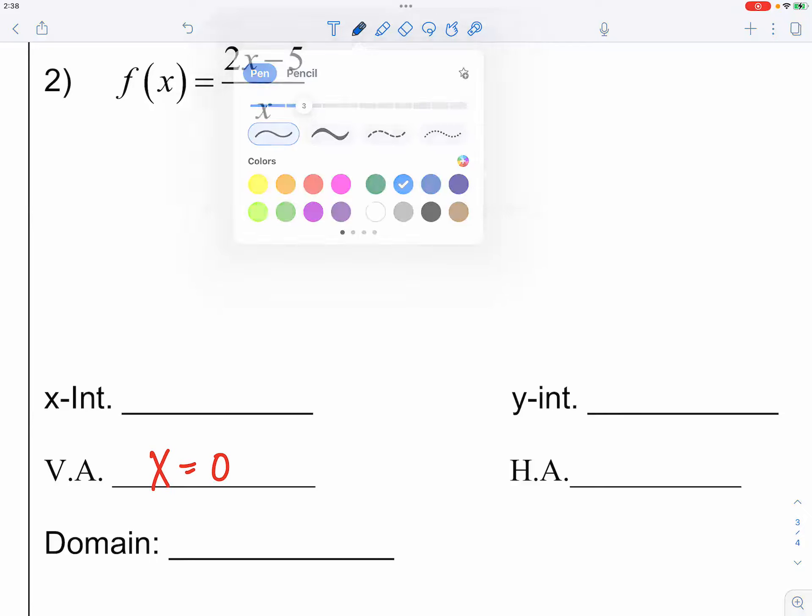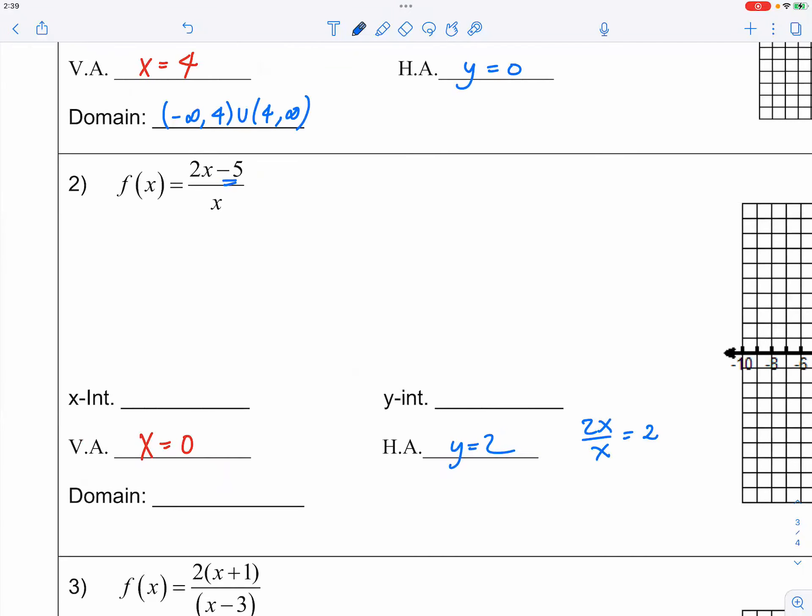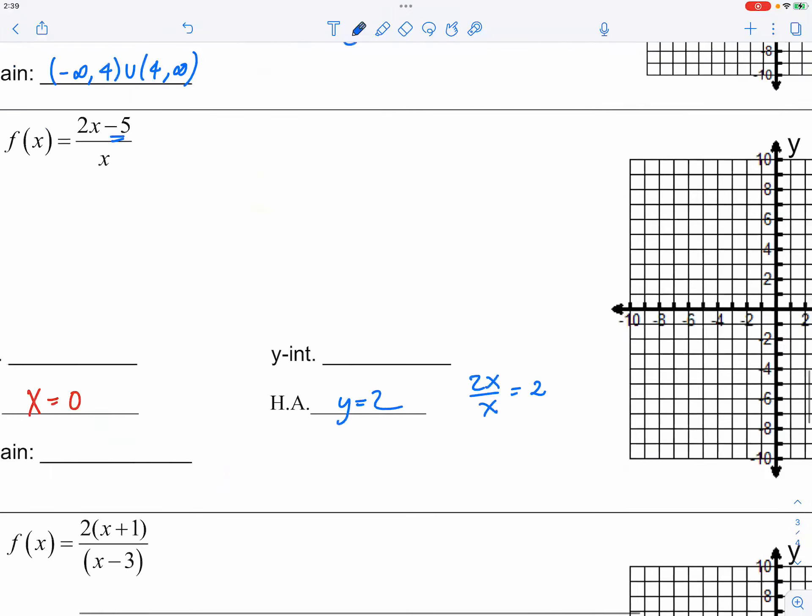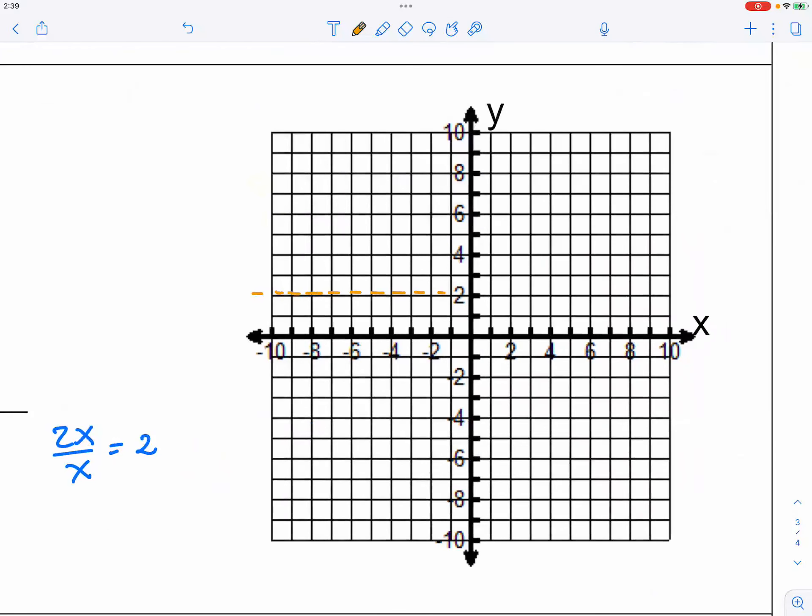What about the horizontal asymptote? It would be two, because minus five wouldn't matter much. So you have two x over x, and when you have two x over x, the x cancels out, so you have just two. So horizontal asymptote is y equals two. Let me go ahead and draw the asymptotes.